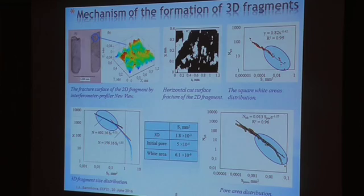Next slide, we consider mechanism of formation of three-dimensional fragments. This is the surface of two-dimensional fragments. White areas show two-dimensional fragments with fracture surface. This horizontal coat is the surface fracture of the two-dimensional fragments in a cross section.